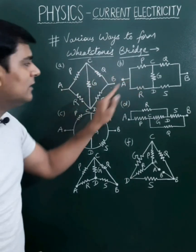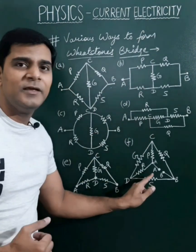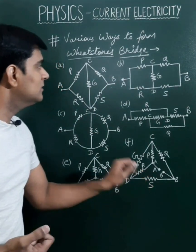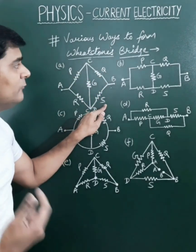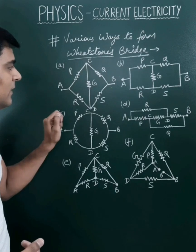All these are the same or equivalent in different forms. We have taken five resistances in each circuit: P, Q, R, S and G, and four points: A, B, C and D.